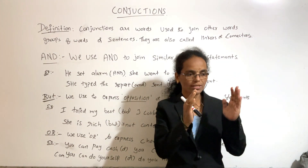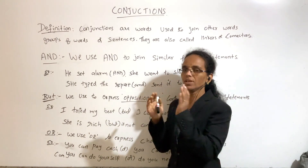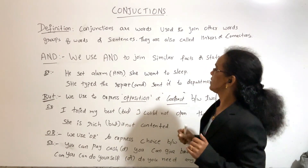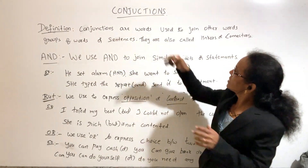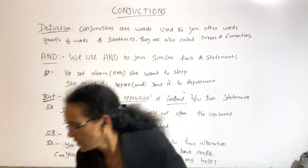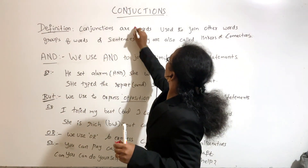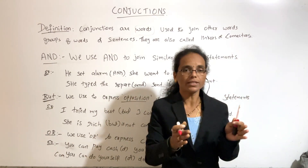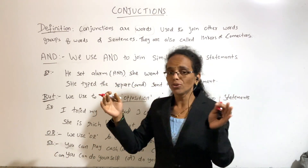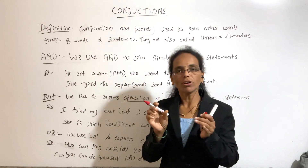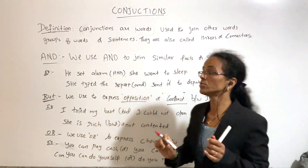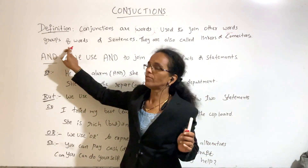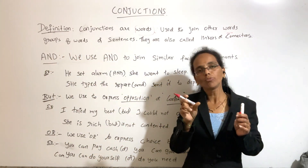Conjunctions are words used to join other words. There can be two sentences or two words. We use conjunctions to join them — whether it's a single word or a group of words.